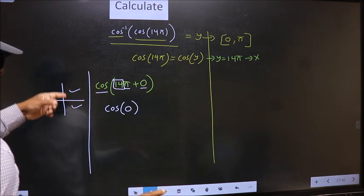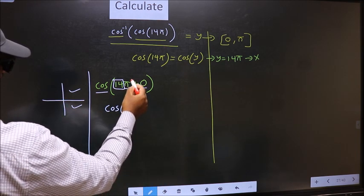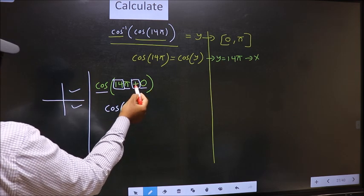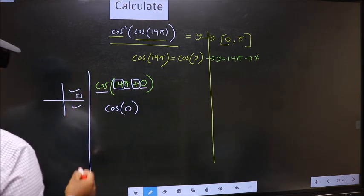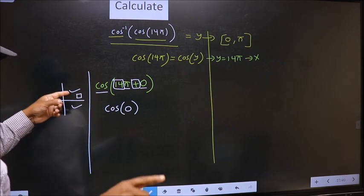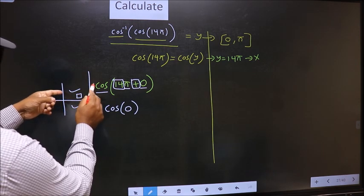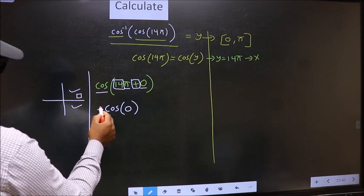So now to select the quadrant, we should look at this symbol. Here we have plus, that means the angle lies in the first quadrant. And in the first quadrant cos is positive. So put plus.